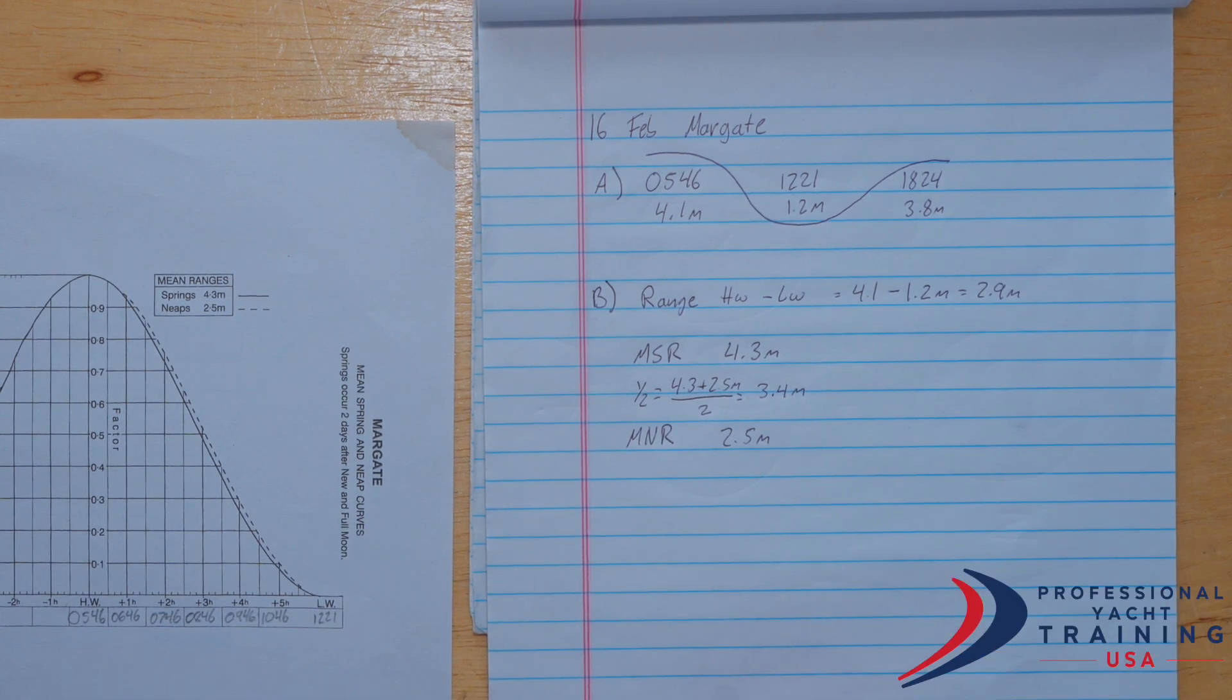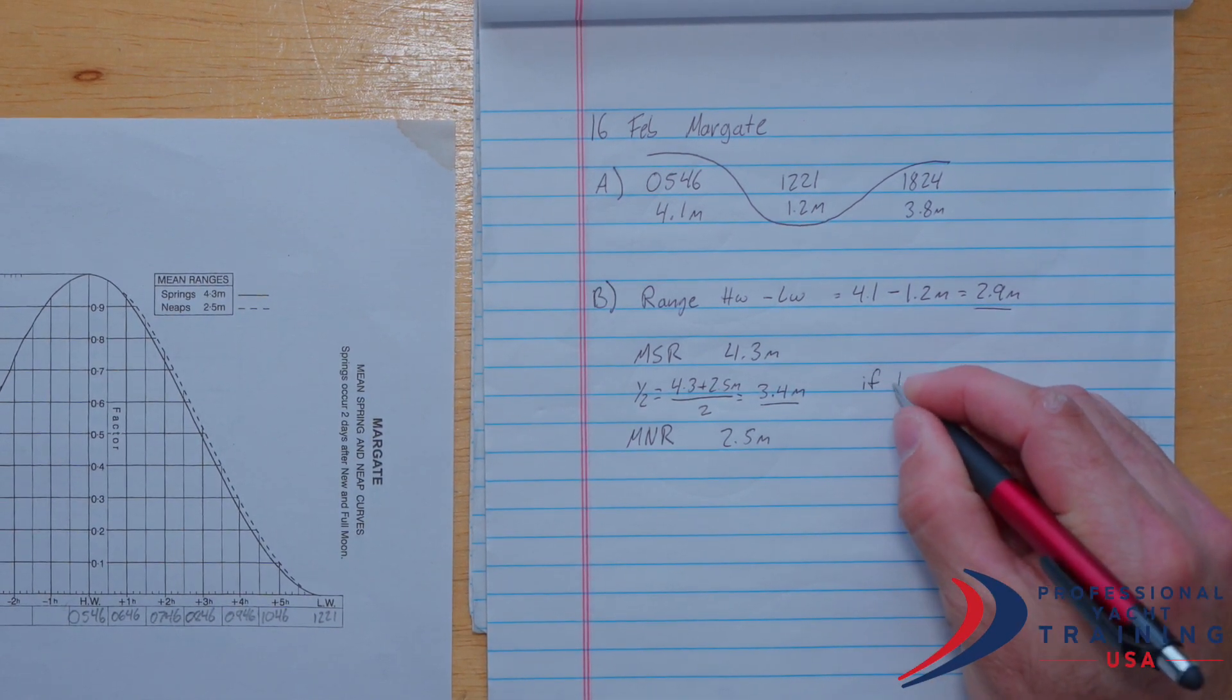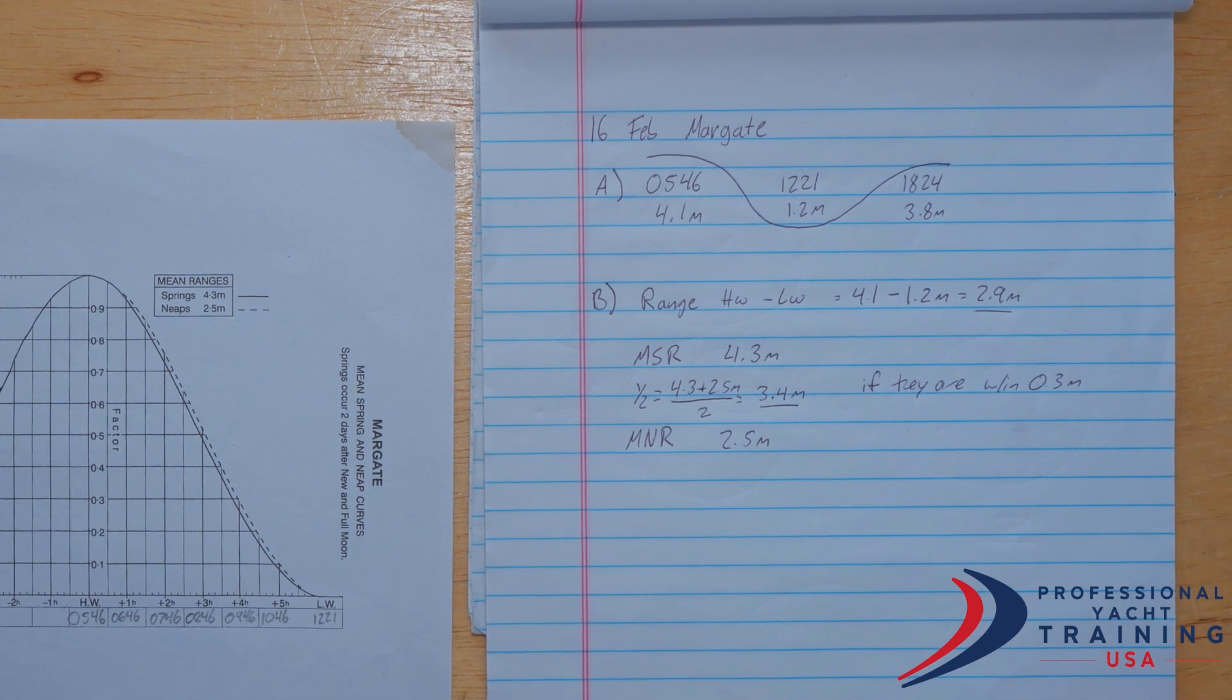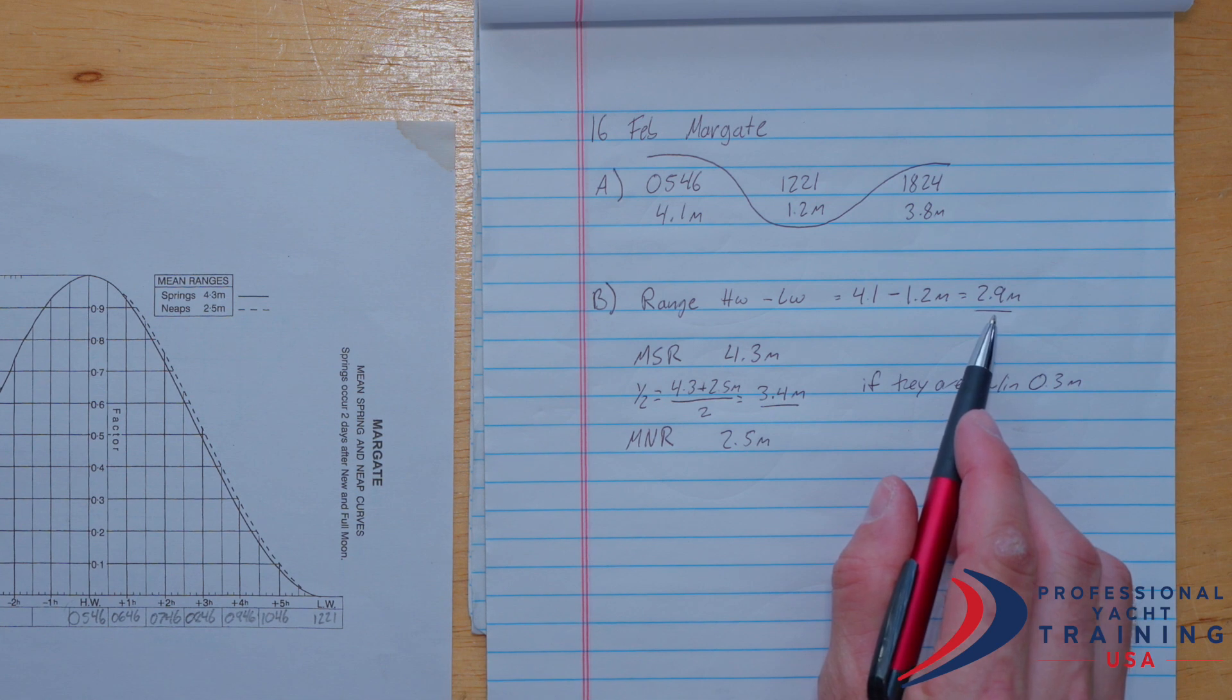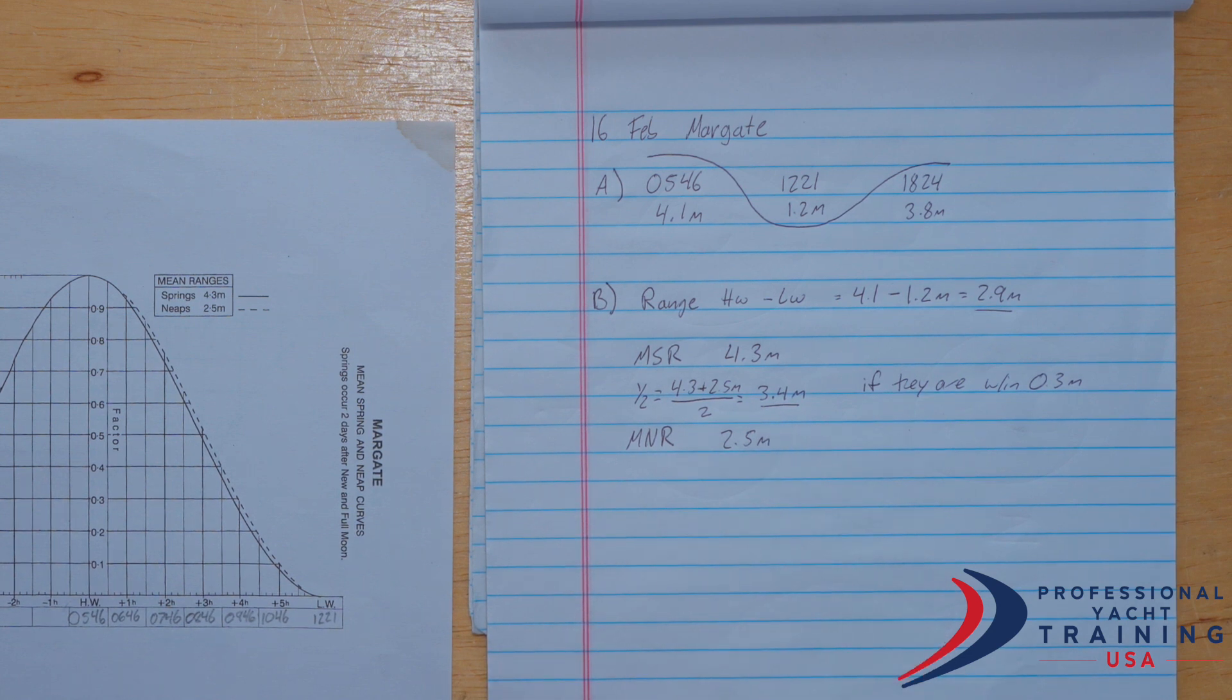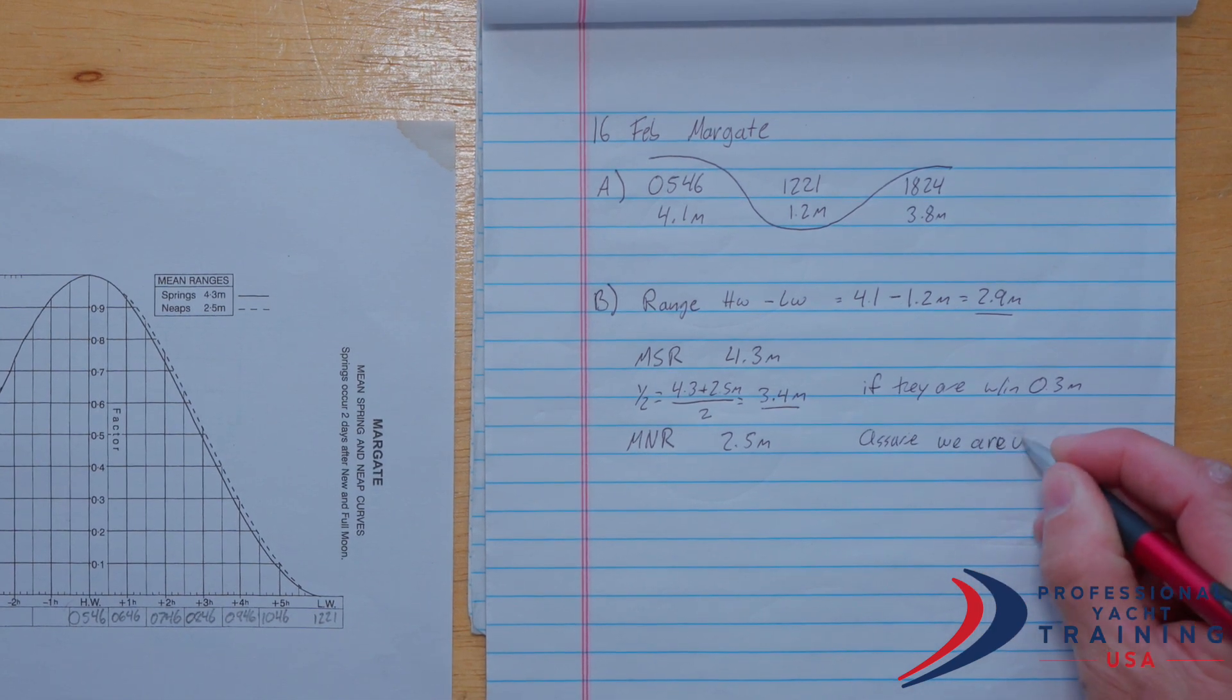You can double-check the math on your calculator. Our step-by-step guide then asks us to consider this value and this value. If they are within 0.3 meters of one another, our step-by-step guide instructs us to interpolate halfway in between those two curves as if we're halfway between springs and neaps. However, for this problem, 2.9 meters is not within 0.3 meters of this halfway point. And so it's actually smaller than that halfway point. So we can assume that we are using a neap tide.